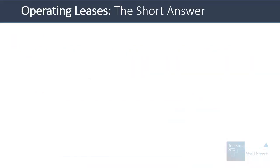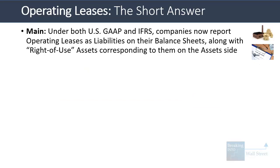Here's the short answer. Under both major accounting systems, companies now report operating leases as liabilities on their balance sheet and report corresponding assets called right-of-use assets — or sometimes lump them together with PP&E (plant, property, and equipment) — on the asset side of the balance sheet.